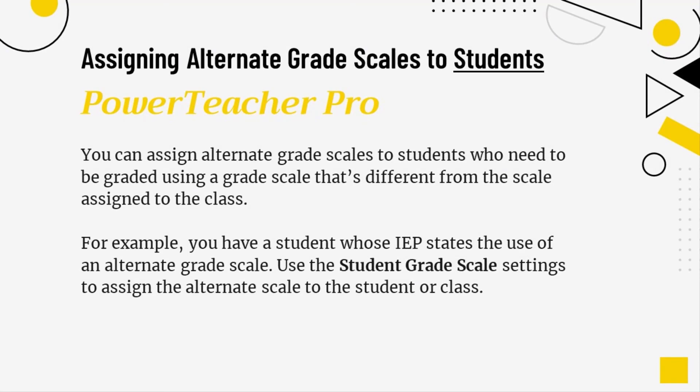The other option in Power Teacher Pro is assigning an alternate grade scale to students — this is different from the custom class grade scale. With student grade scales, you can assign alternate grade scales to students who need to be graded using a scale different from the class scale. For example, if a student's IEP requires the use of an alternate grade scale, you can use the student grade scale settings to assign that scale to individual students or the full class from a district-defined menu.